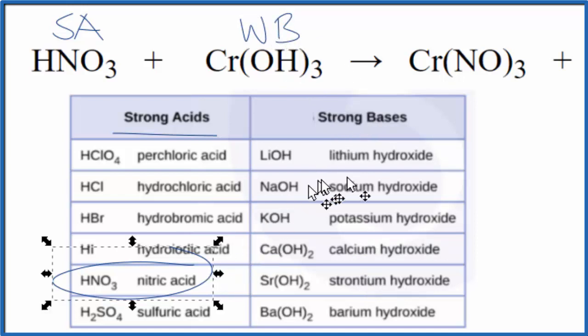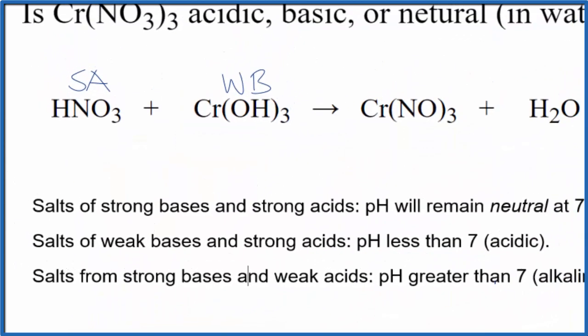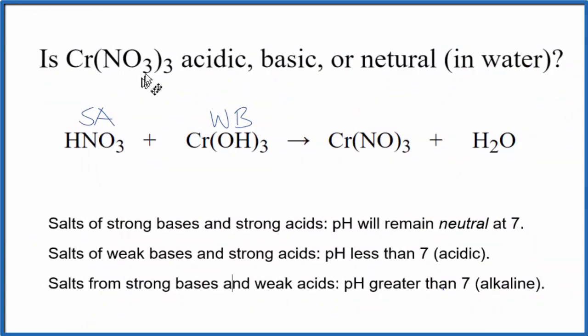So now we know the strength of the acid and the base that form this neutralization reaction to make our chromium 3 nitrate. Let's use the rules to figure out whether this Cr(NO3)3 is acidic, basic, or neutral.